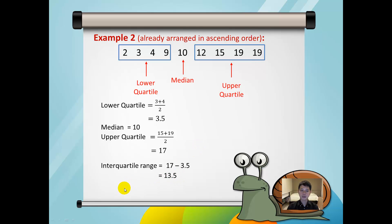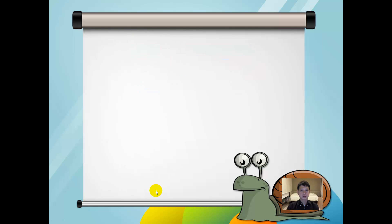Finally, to find the range, we have the biggest number minus the smallest number, which is 19 minus 2, equals 17.